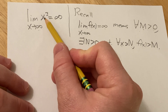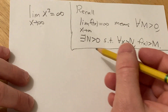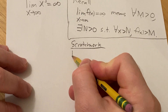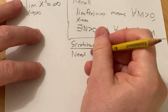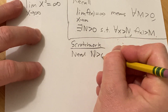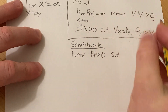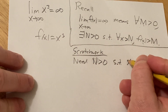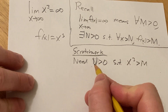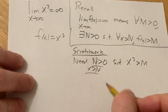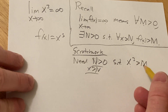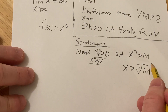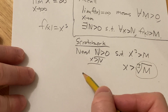So we have to prove this for f of x equals x cubed. Scratch work. We need an n greater than zero such that f of x is bigger than m. f of x here is x cubed, so such that x cubed is bigger than m, whenever x is bigger than n. So how do we solve for x? We can just take the cube root of both sides. So x is bigger than the cube root of m. So if we take n to be this number or bigger, then everything should be good.